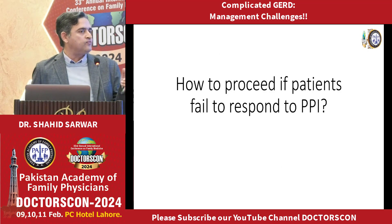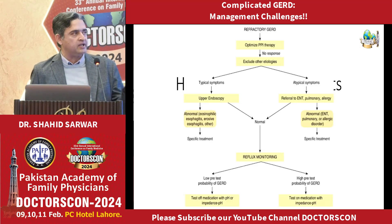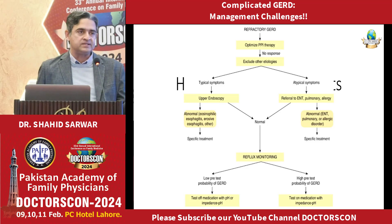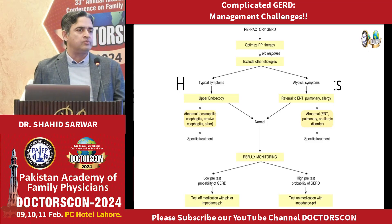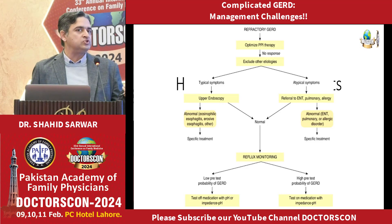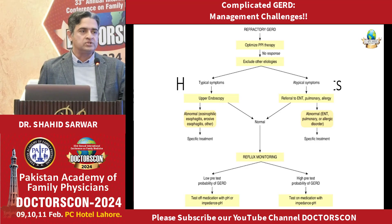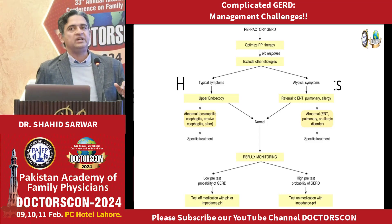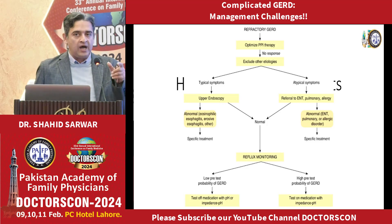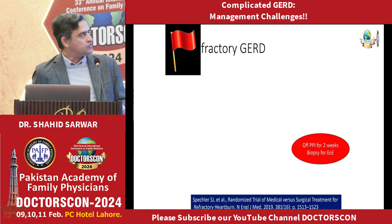In the refractory GERD algorithm, the first step is clinical evaluation and exclusion of other diagnoses. Upper GI endoscopy follows, especially for typical symptoms — biopsies should always be taken to rule out eosinophilic esophagitis, and other possible causes are excluded. For atypical symptoms like asthma, cough, or sore throat, ENT or pulmonology input is needed. If endoscopy is normal, pH monitoring is the next test required before proceeding to advanced interventions.